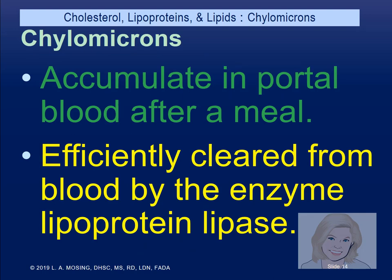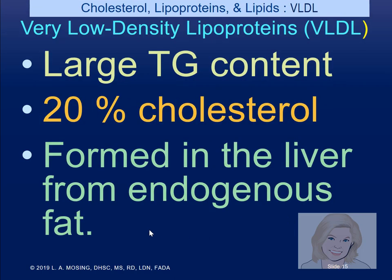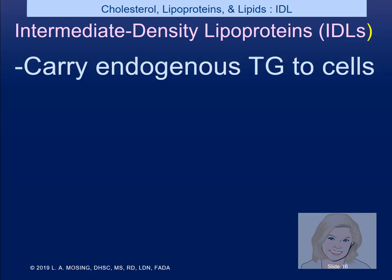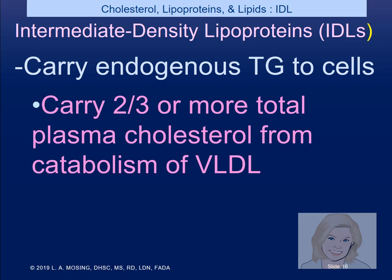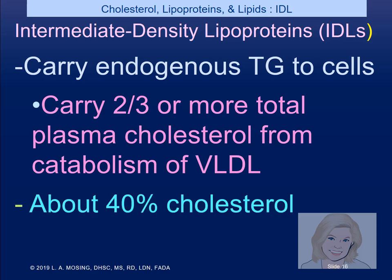Chylomicrons accumulate in the portal blood after a meal and are efficiently cleared by the enzyme lipoprotein lipase. Very low density lipoproteins (VLDL) have a large triglyceride content — about 20% cholesterol — formed in the liver from endogenous fat. Intermediate density lipoproteins (IDL) carry endogenous triglyceride to the cell and carry two-thirds or more of total plasma cholesterol from the breakdown of VLDL; they're about 40% cholesterol.